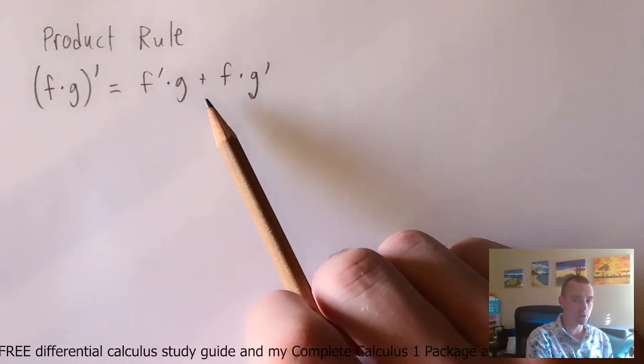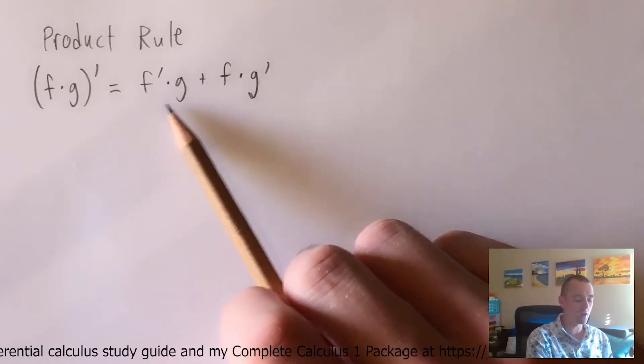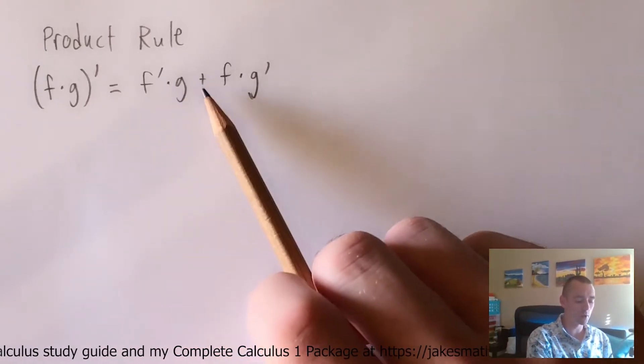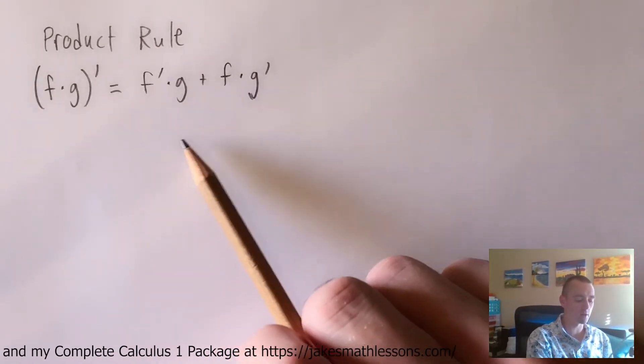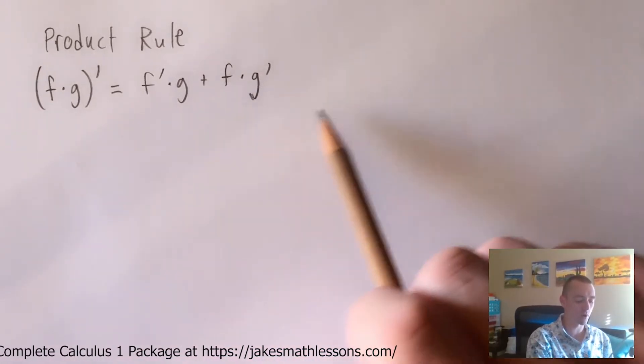And similarly addition is the same way. If you have f prime times g plus f times g prime, that's the same as f times g prime plus f prime times g.